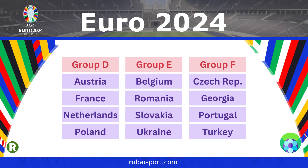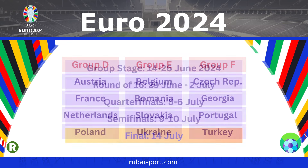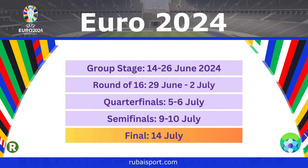Group F: Czech Republic, Georgia, Portugal and Turkey. The entire tournament runs from Saturday, June 14th to Sunday, July 14th. The group stage runs June 14th to 26th. The top two teams from each group will progress to the knockout stages, which culminate with the final on July 14th.